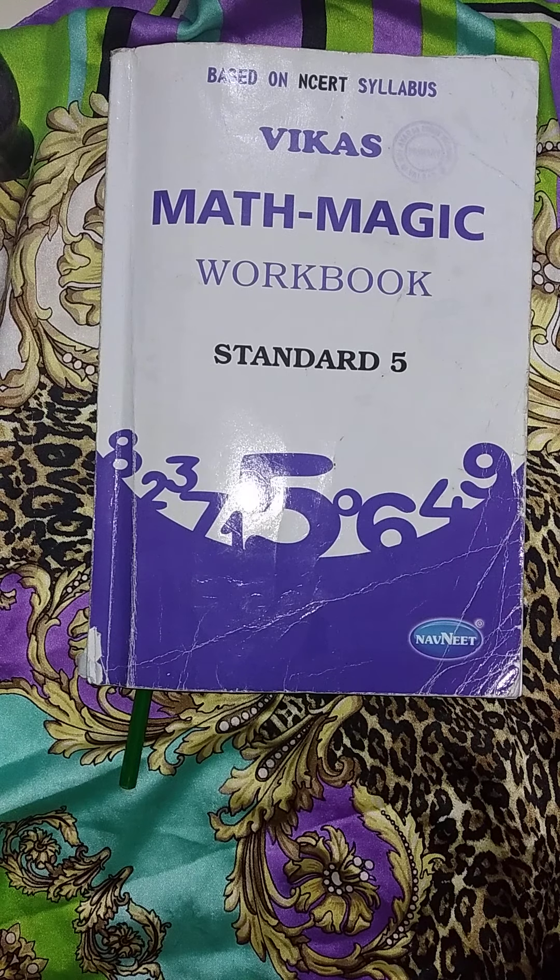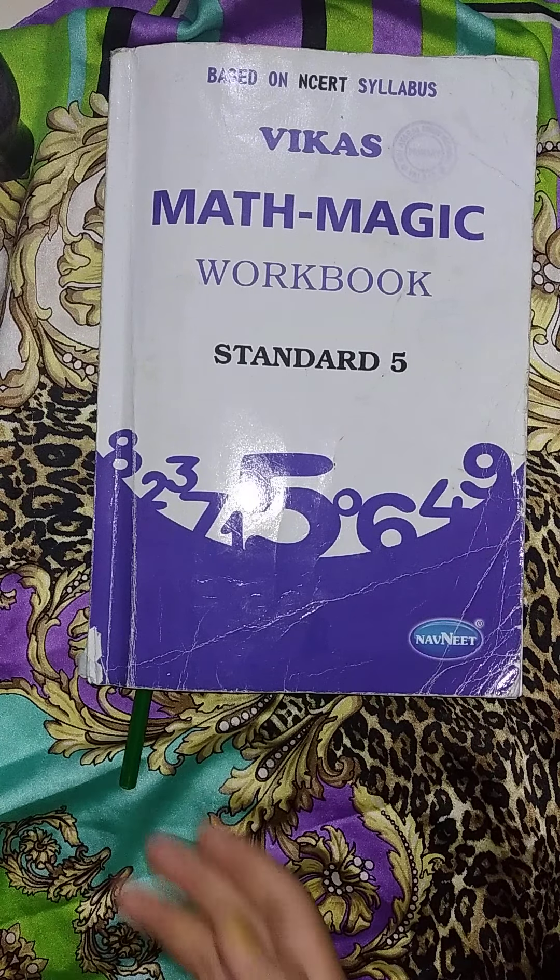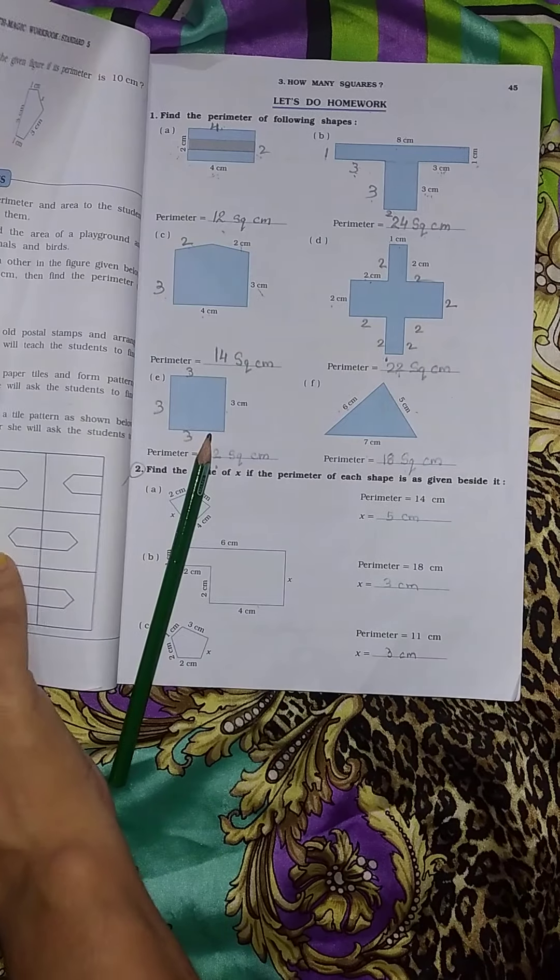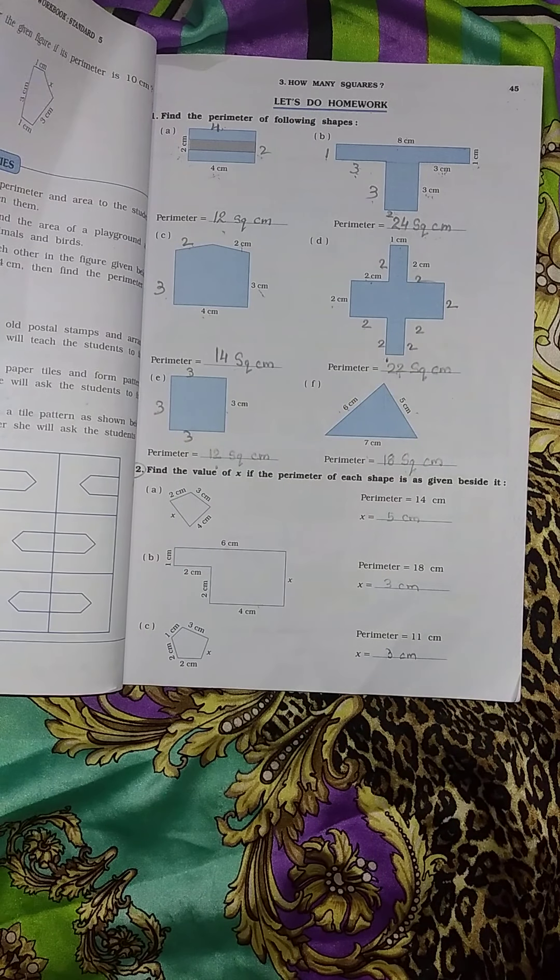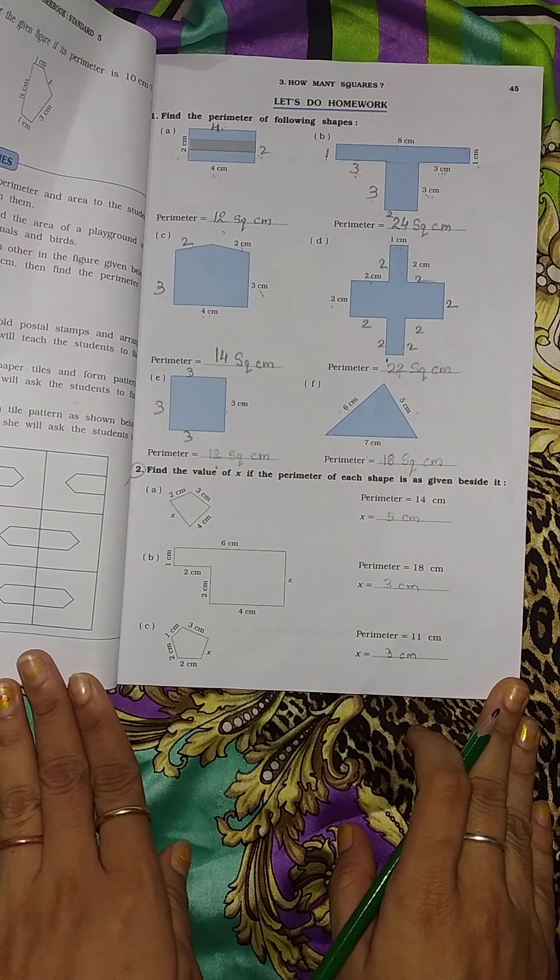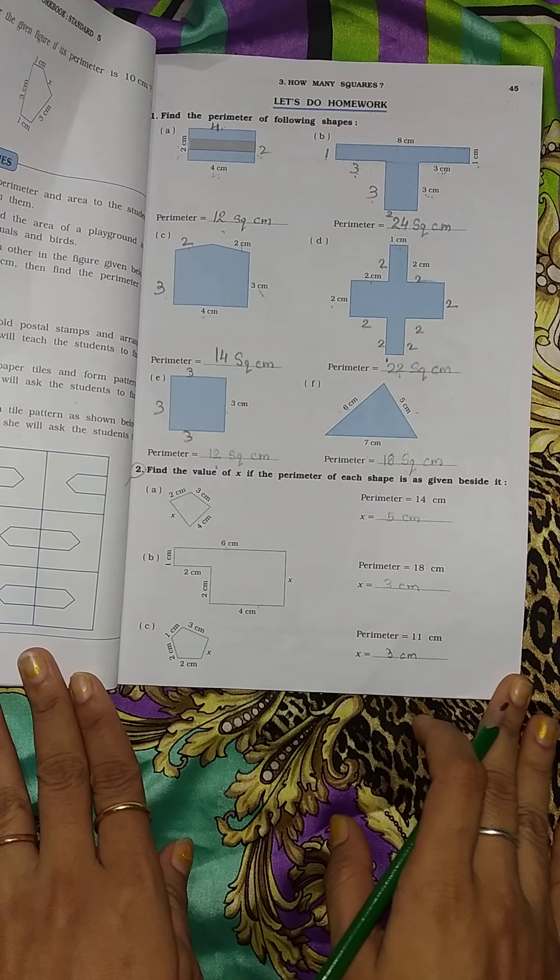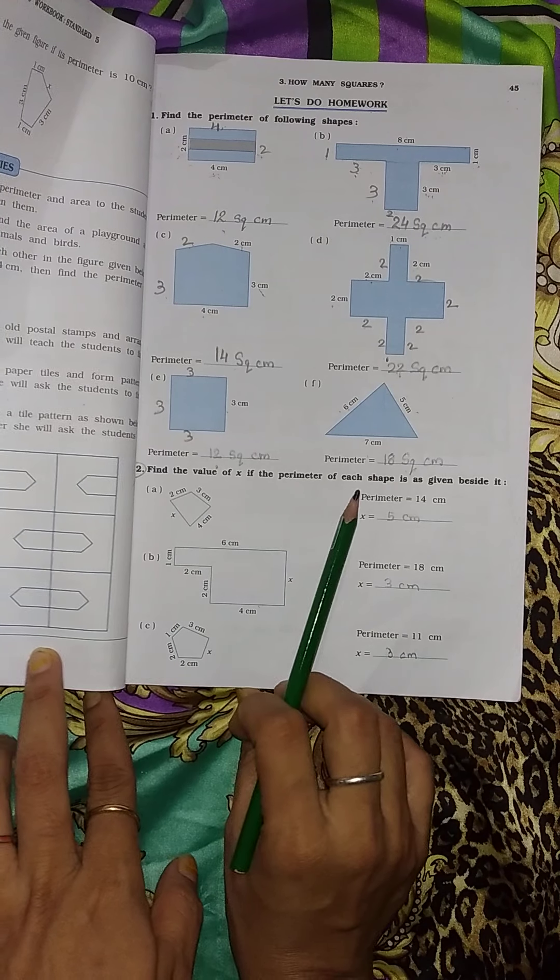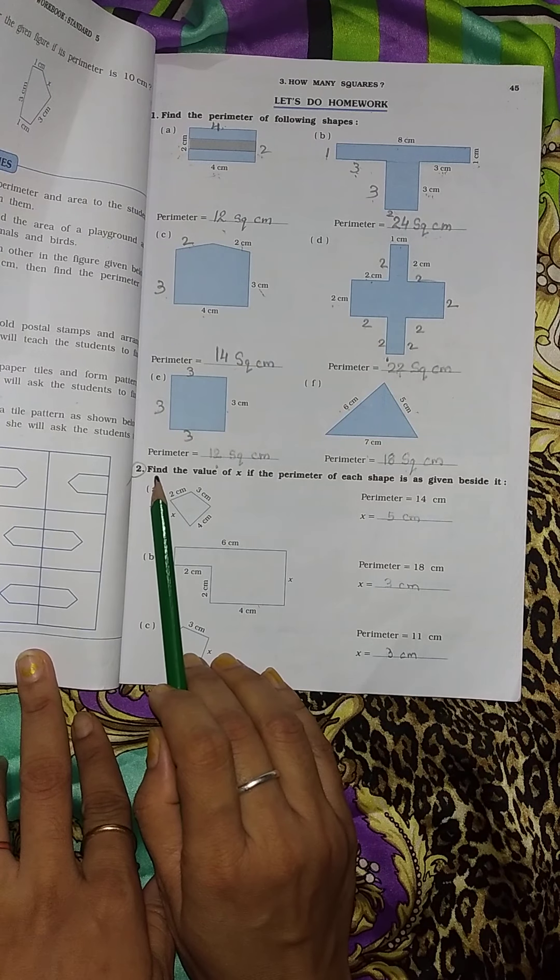Good morning students. Standard 5, subject is maths. The chapter is again chapter 3, How Many Squares. Now I am explaining to you, let's do homework. The question number is 2. See the question.